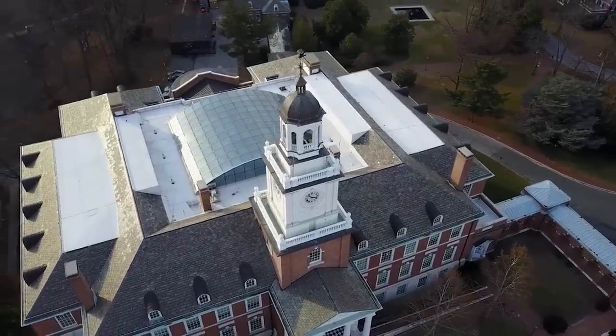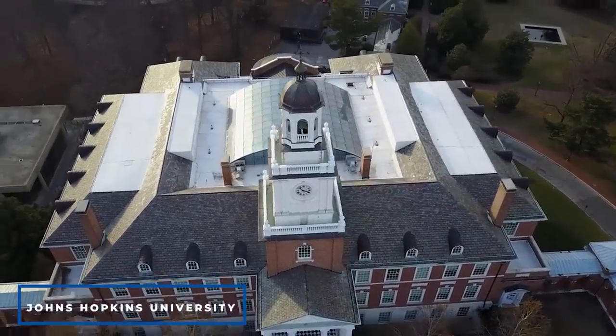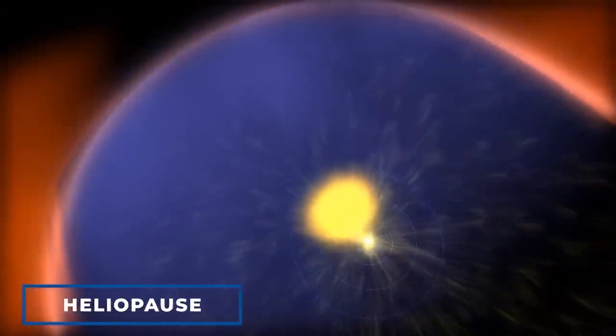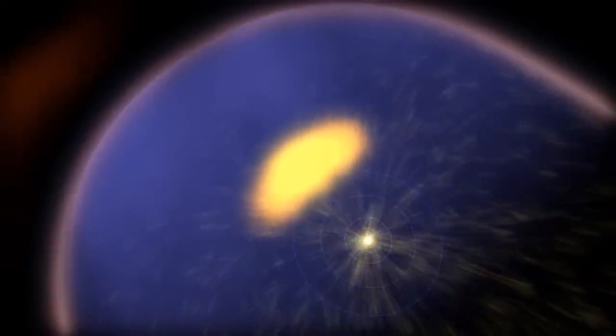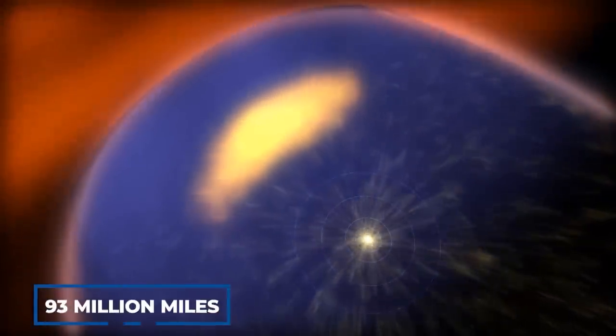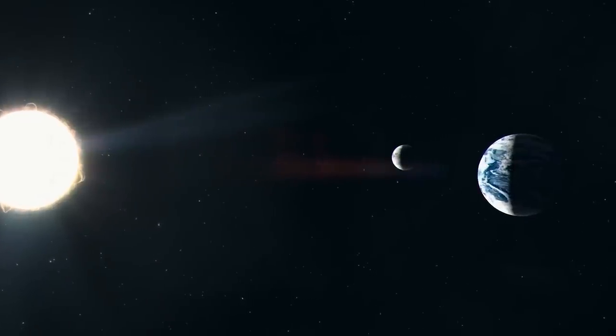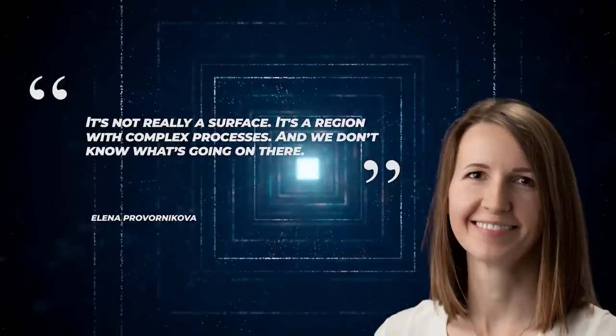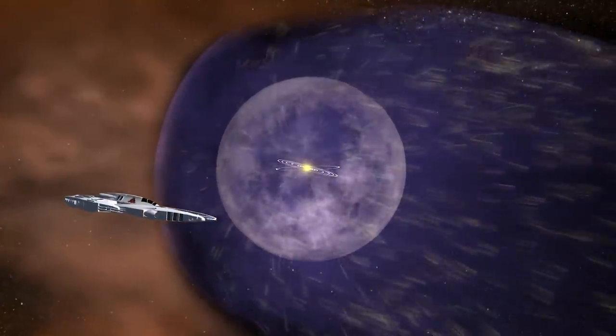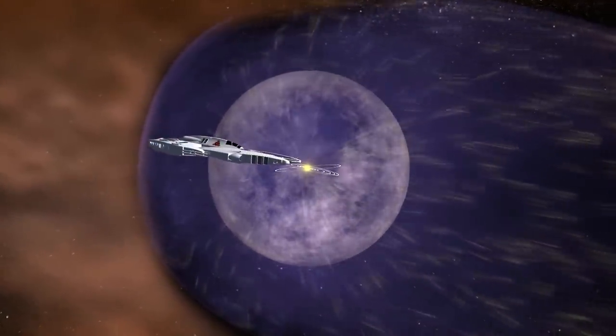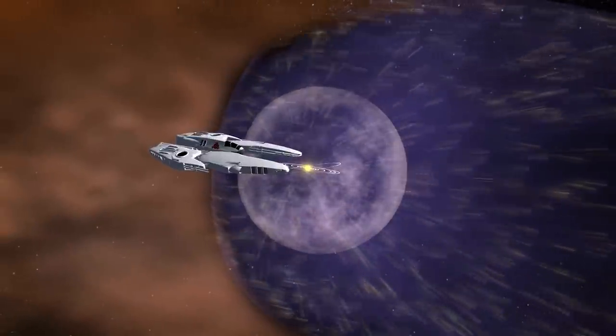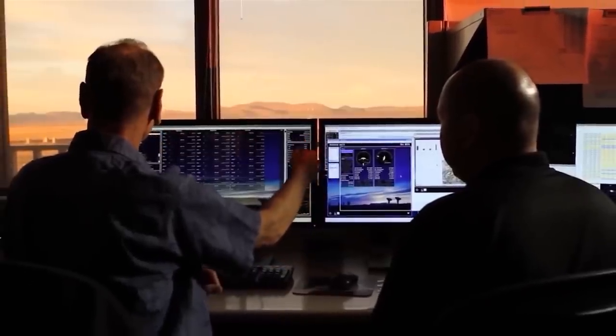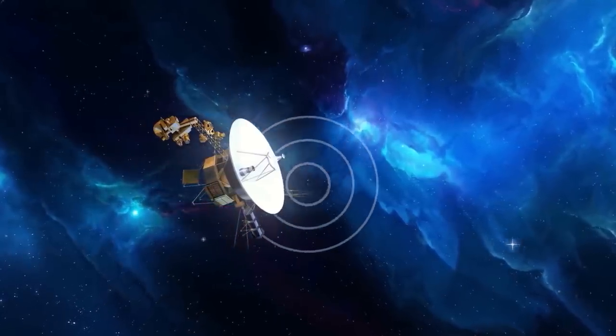According to Elina Pravonikova, a postdoctoral researcher at the John Hopkins University Applied Physics Laboratory, the heliopause is estimated to be roughly one astronomical unit thick, or 93 million miles, which is the distance between the Earth and the sun. It's not really a surface, it's a region with complex processes, and we don't know what's going on there. And since no spacecraft has ever made it beyond the heliosphere in the history of mankind and space exploration, scientists have been closely monitoring the voyagers' signal feedback from this region.